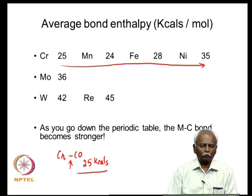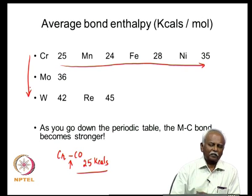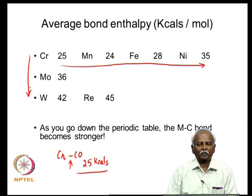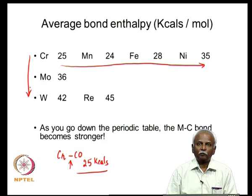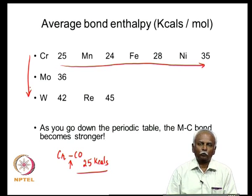As you go down the periodic table, the bond energy increases significantly — for example, from chromium hexacarbonyl to molybdenum hexacarbonyl, the BDE increases by about 10 kcal/mol (~33%), and by another ~16% going from molybdenum to tungsten. It is possible to have very strong bonds in 4d and 5d elements. This is a general phenomenon in organometallic chemistry: the metal-carbon bond strength increases as you go down the group.